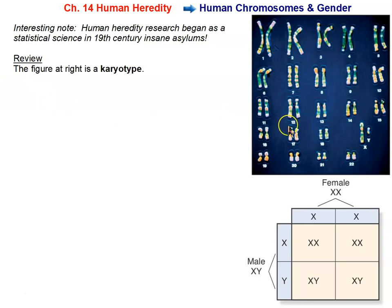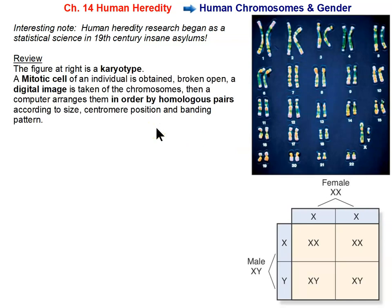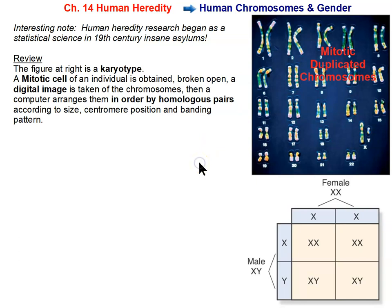The figure at the right is a karyotype. The way they make this karyotype is to obtain a mitotic cell — a cell that is undergoing mitosis — so that the chromosomes are condensed into mitotic chromosomes and visible under the microscope. They take a picture, cut out the chromosomes, and arrange them in order according to size and banding pattern, pairing them up in homologous pairs. These are all mitotic duplicated chromosomes, meaning each chromosome is made up of two sister chromatids — two copies of the DNA molecule.